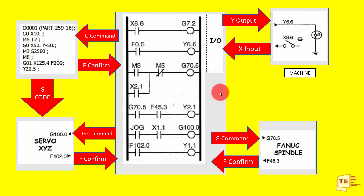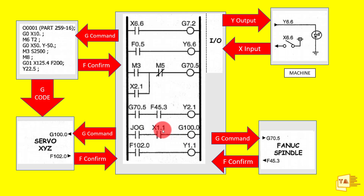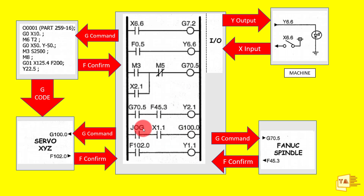Suppose you want to move the X axis in jog mode — first you should change the machine mode to jog mode. Once jog mode is turned on, if you give X 1.1, then G 100.0 will be activated. This bit is particularly assigned for X axis; maybe 1.2 is for Y axis, and so on. So depending on the axis, you can use the corresponding inputs. Before that, you need to put the machine into jog mode, otherwise the axis will not move.